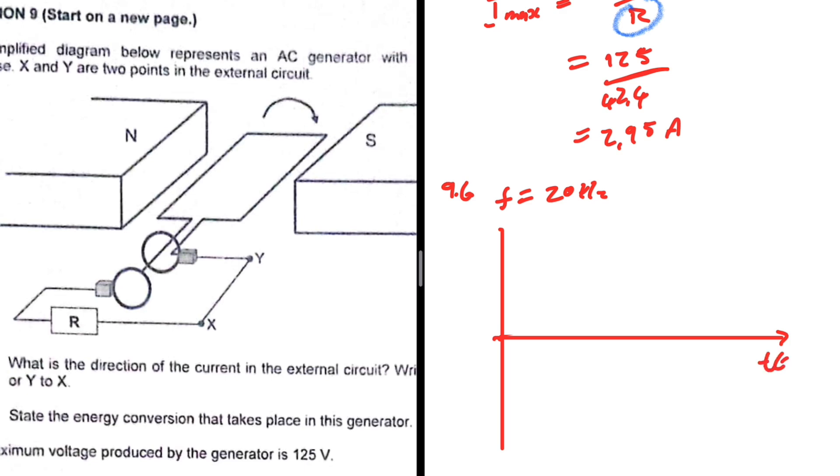So it means that our graph should start from up here. That's where our graph will start, because the position in the sketch gives us the maximum current. We need two complete rotations.